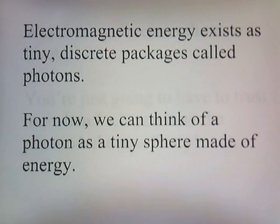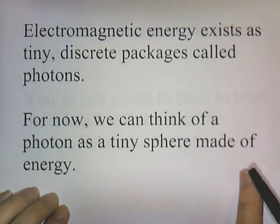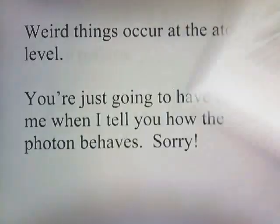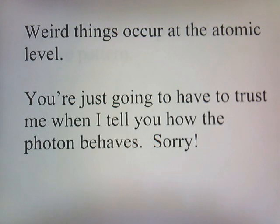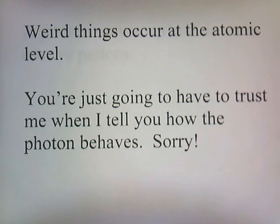Electromagnetic energy exists as tiny, discrete packages called photons. For now, we can think of a photon as a tiny sphere made of energy. Weird things occur at the atomic level, and I'm going to warn you that I'll tell you things that might not make sense or sound contradictory. Weird things happen all the time in the quantum world, so you're just going to have to trust me when I tell you how the photon behaves.